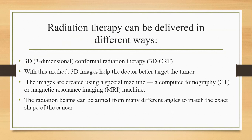Radiation therapy can be delivered in different ways. The first is three-dimensional 3D conformal radiation therapy. With this method, 3D images help the doctor better target the tumor. The images are created using a special machine — a computed tomography CT or magnetic resonance imaging MRI machine. The radiation beam can be aimed from many different angles to match the exact shape of the cancer.